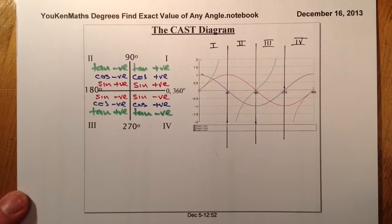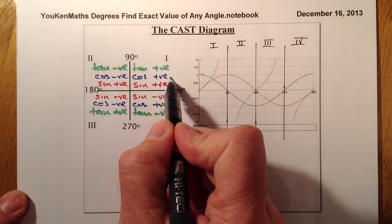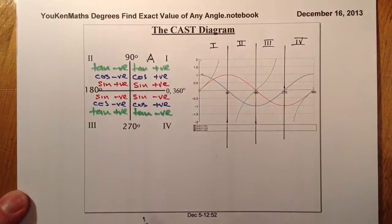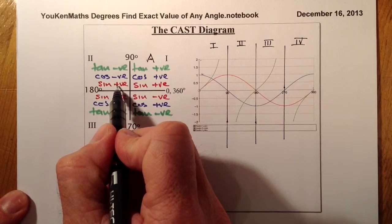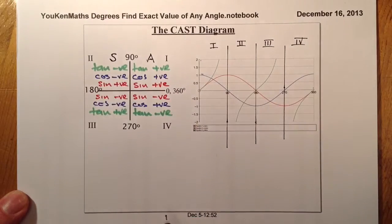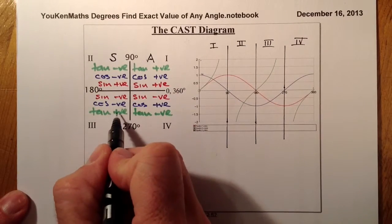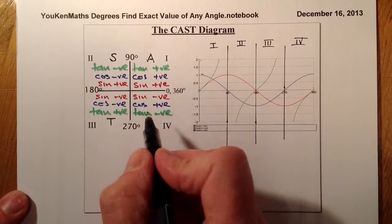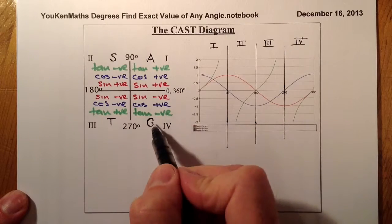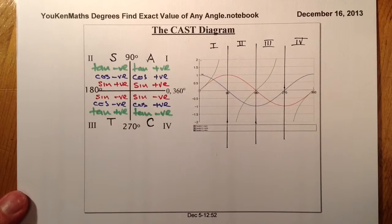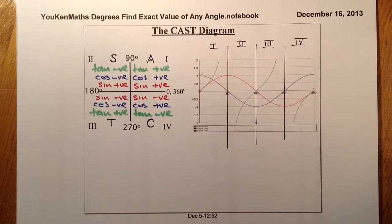From this, all angles in quadrant one are positive — so that's A for All. In quadrant two, only sine is positive — so that's S. In quadrant three, only tan is positive — so that's T. And in quadrant four, cosine is positive — so that's C. This is where the CAST diagram comes from: just the letters that make up the quadrants.